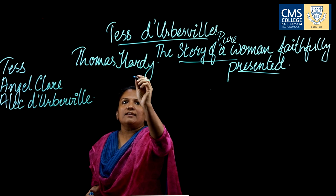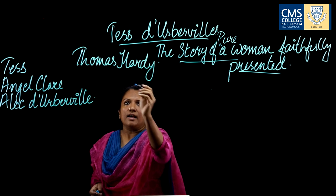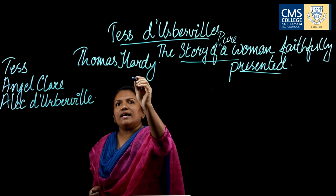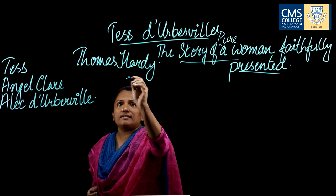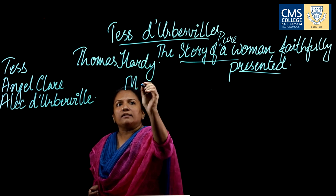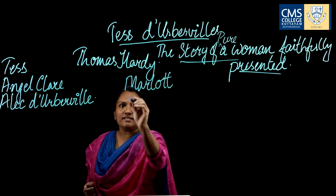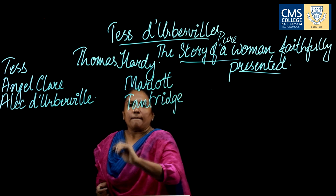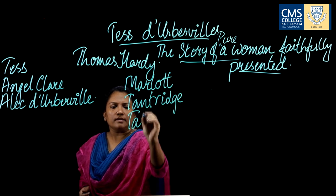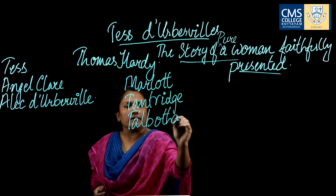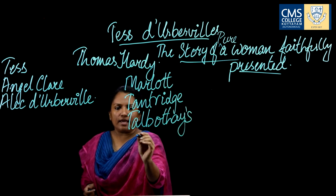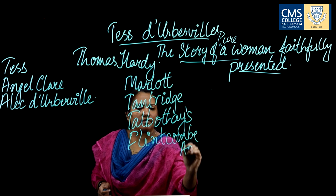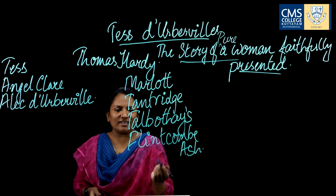The next thing I want to tell you about the novel is the destinations — the locales, the places the novel is centered around. The first place is Marlott, the second is Tantridge, the third is Talbothays, and we have Flintcomb Ash.